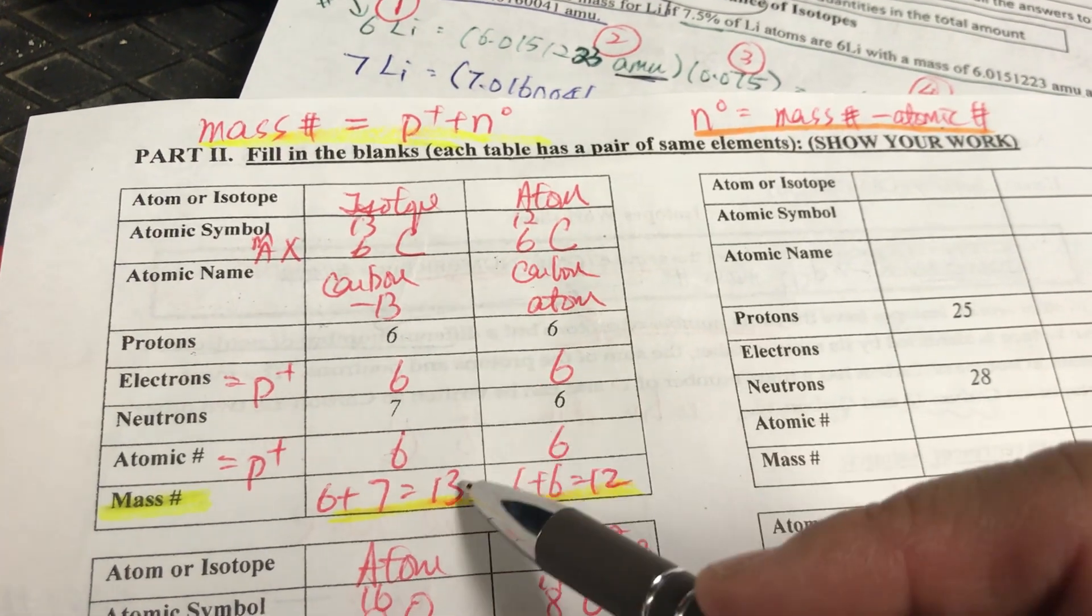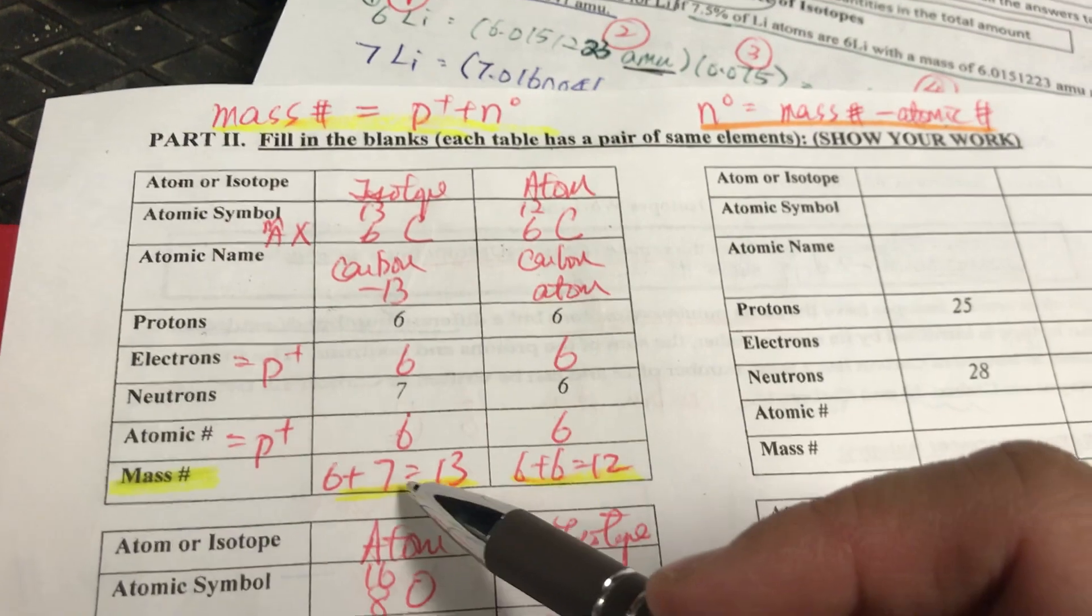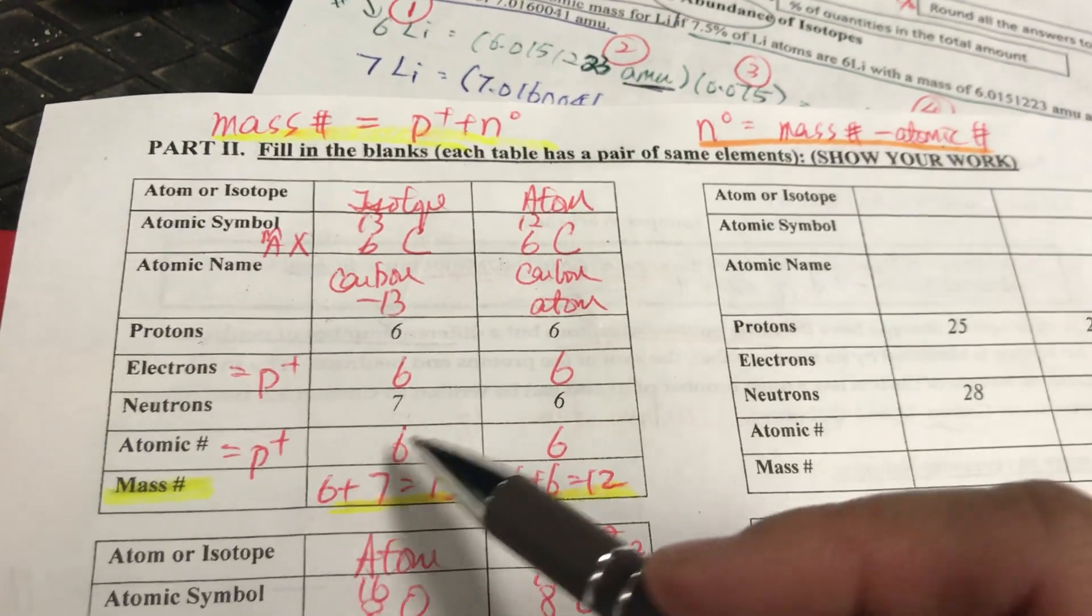Atomic number would be the same thing as protons, so it would be 6 and 6. And then the mass number, again, we did not get...